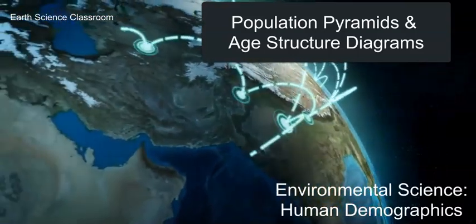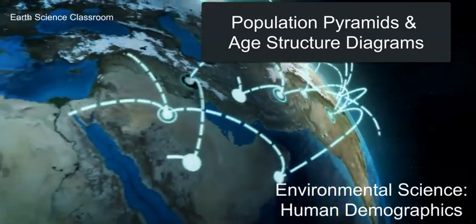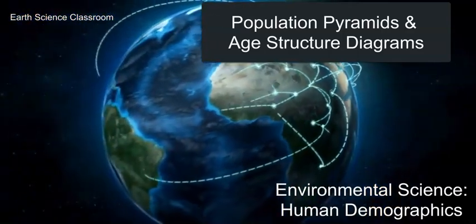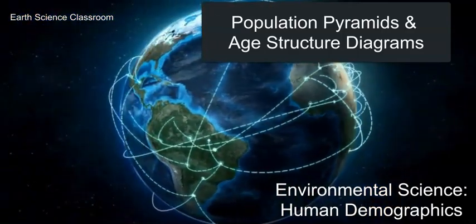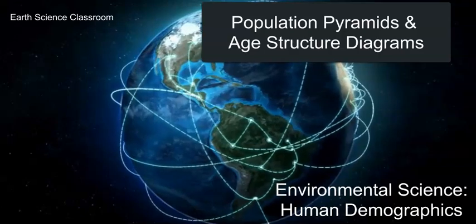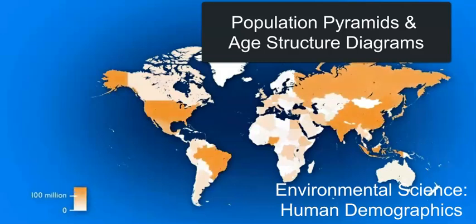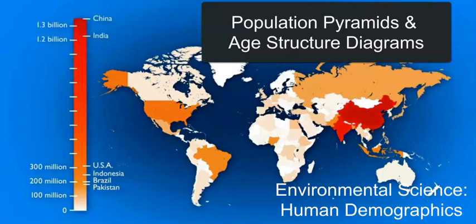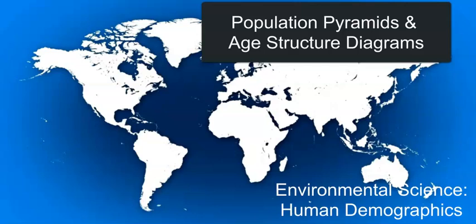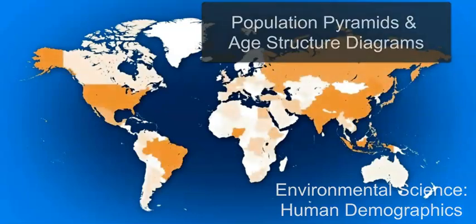This video is on environmental science. We're looking at human populations and demographics, and in more detail at age structure diagrams or population pyramids — looking at different types of pyramids, what they mean, the shape, what it indicates in terms of demographic issues and data, and looking at different examples of countries with these kinds of pyramid shapes.